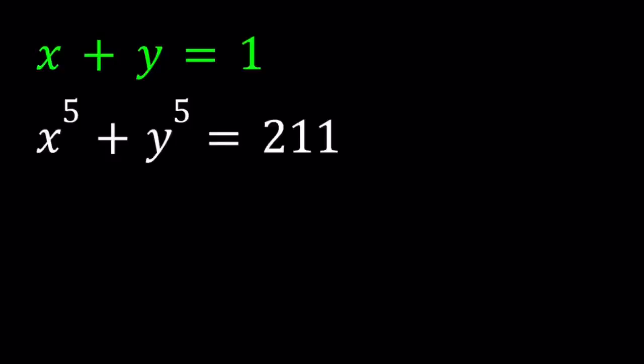Hello everyone. In this video we're going to be solving a system of equations, a polynomial system in two variables. We have x plus y equals 1 and x to the 5th power plus y to the 5th power equals 211. I'll be presenting two methods. Let's start with the first one.